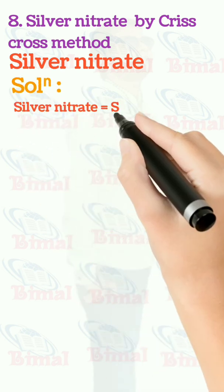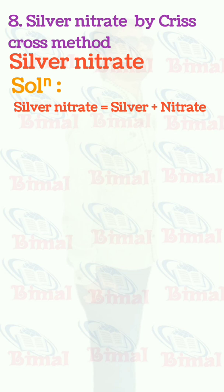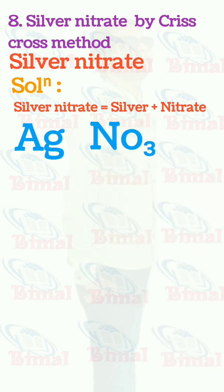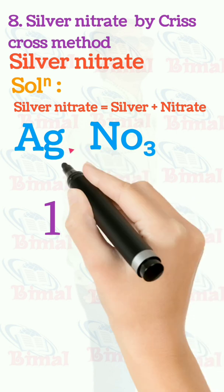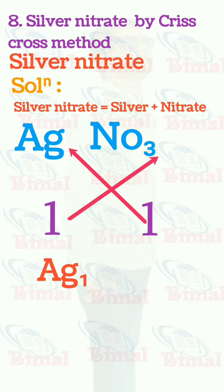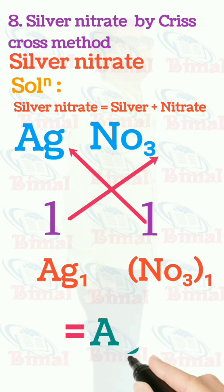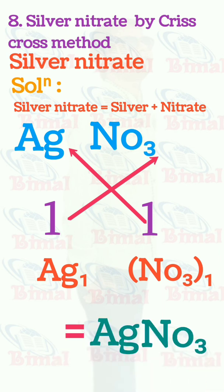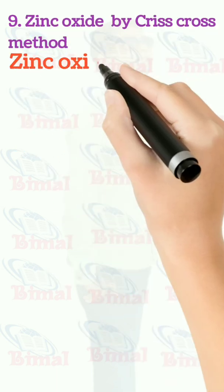Molecular formula of silver nitrate by criss-cross method. Silver nitrate is equal to silver plus nitrate. Symbol for silver is Ag, symbol for nitrate is NO3. Valency of silver is 1, valency of nitrate is 1. When criss-cross is done, the valency is exchanged and we write Ag1 NO3(1), which is equal to AgNO3. In the molecular formula we don't write 1, so we simply write AgNO3, which is the molecular formula of silver nitrate.